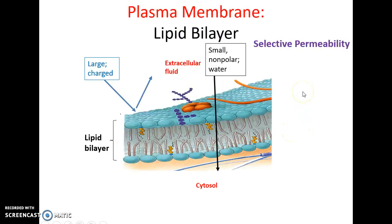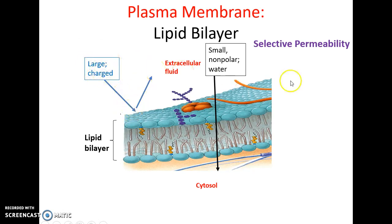The plasma membrane allows for selective permeability. Many things cannot pass through the hydrophobic barrier — large materials and charged materials cannot pass through — while small nonpolar materials can, as well as water.